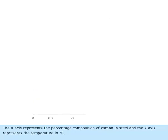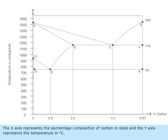The x-axis represents the percentage composition of carbon in steel, and the y-axis represents the temperature in degrees centigrade.